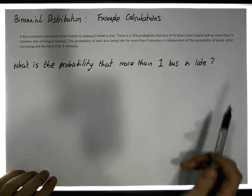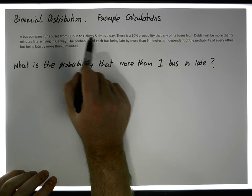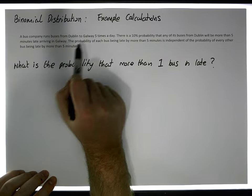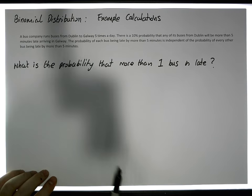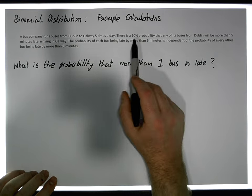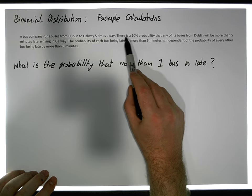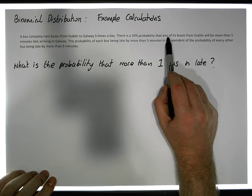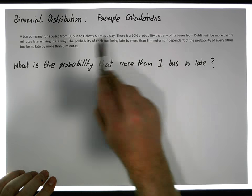Let me just run through this again. We have a bus company that runs buses from Dublin to Galway. The bus runs five times a day — so there are five buses over the course of a day from Dublin to Galway. What we also know is that there's a 10% probability, a 10% likelihood, a 10% chance that any one of its buses going from Dublin